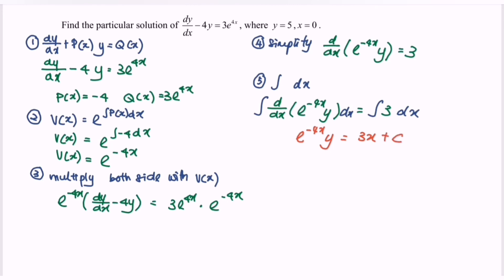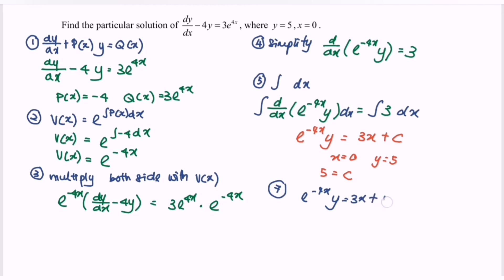Then we have the general solution. Given x equals 0 and y equals 5, substituting gives 5 equals C. So we have e^(negative 4x) times y equals 3x plus 5. Rewriting: y equals 3x times e^(4x) plus 5e^(4x).